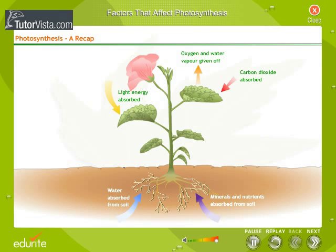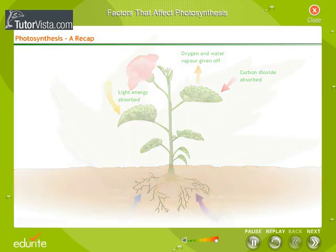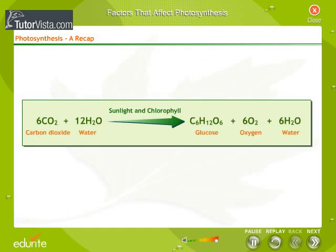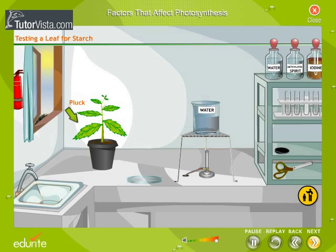This process is known as photosynthesis. We can summarize the process by the equations shown here. Chloroplasts in plant cells absorb light energy from the sun. In photosynthesis, CO2 (carbon dioxide) and H2O (water) are combined to form C6H12O6 (glucose) and O2 (oxygen).